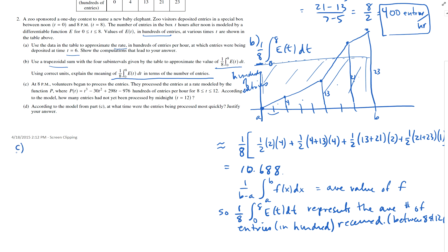Okay, see. At eight p.m., volunteers begin to process the entries. They process the entries at a rate modeled by function p, given by that. Hundreds of entries per hour from eight to 12. According to the model, how many entries had not yet been processed by midnight? Well, we've got p of t equals t cubed minus 30t squared plus 298t minus 976. Now remember, this is hundreds of entries per hour.